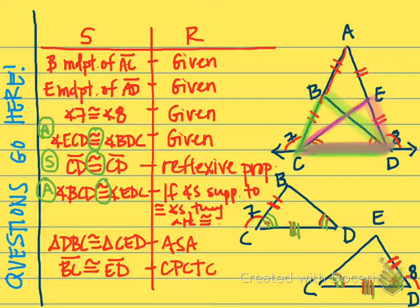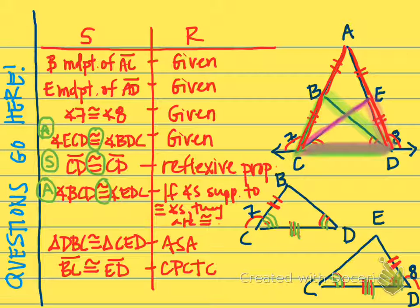This half, this half, this half, and this half are all congruent. So now I'm able to say, by the multiplication property, I'm going to take these two congruent halves, double them, and I'll get AC and AD. Those are congruent by the multiplication property.